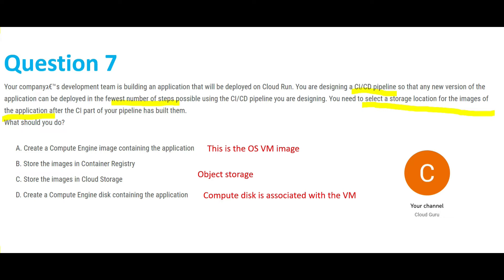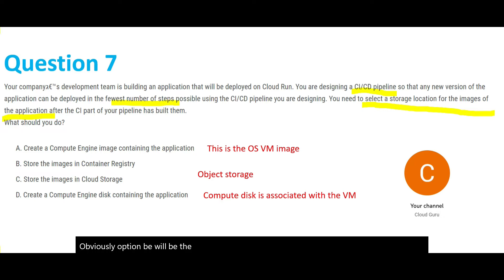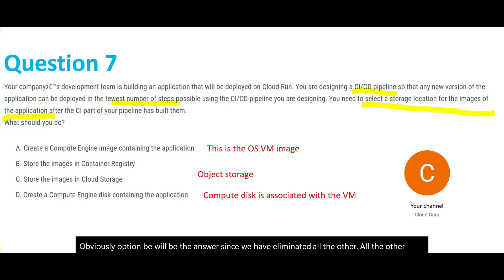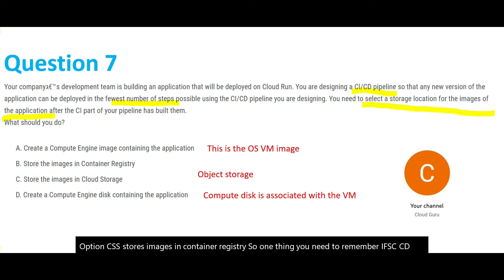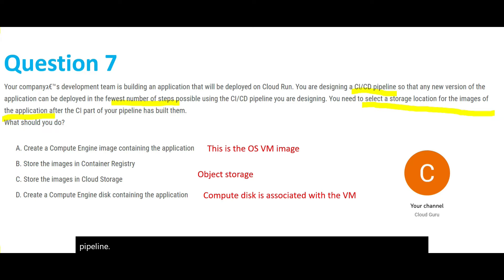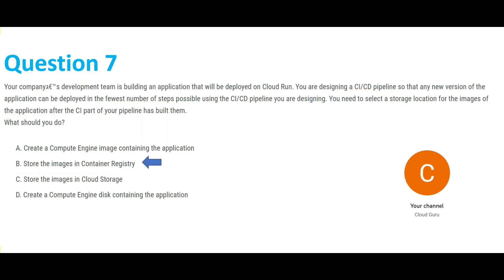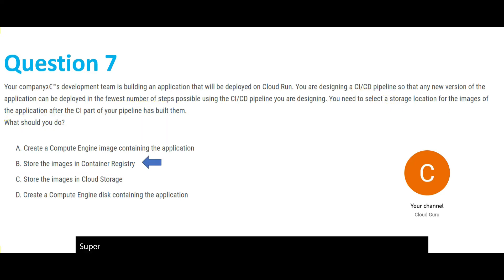Since we've eliminated all other options, option B is the answer. Option B is store the images in Container Registry. One thumb rule to remember: if a CI/CD pipeline is involved, the storage location will be Container Registry. So for question 7, option B — store the images in Container Registry — is the answer.